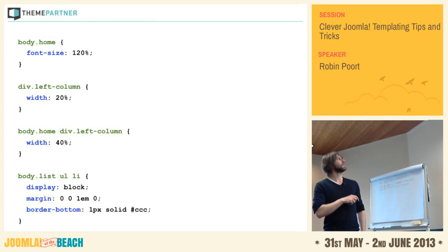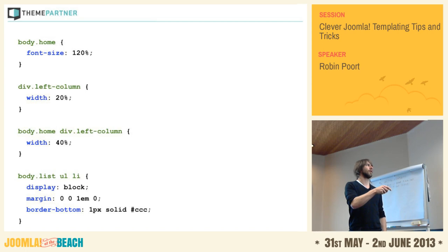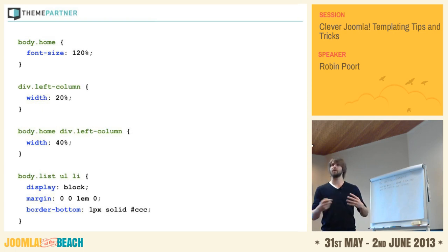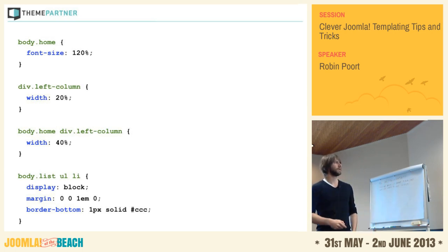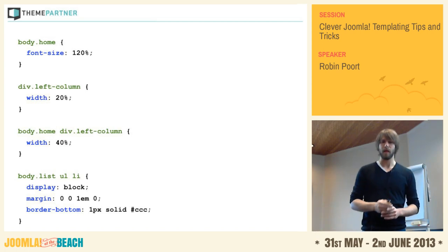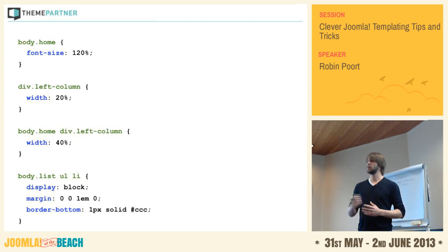Now we've got full control to do things with your CSS. Your font size on your homepage — because it has the class 'home' on your body — you can make the font a little bit bigger. Your left columns are 20%, but on home your left columns are 40%. You could create a class called 'list' for pages with a list kind of view, and add the same class to different pages to make elements behave in a certain way.